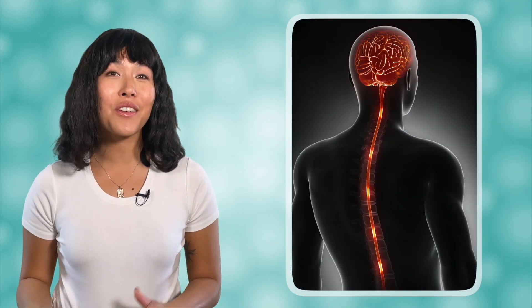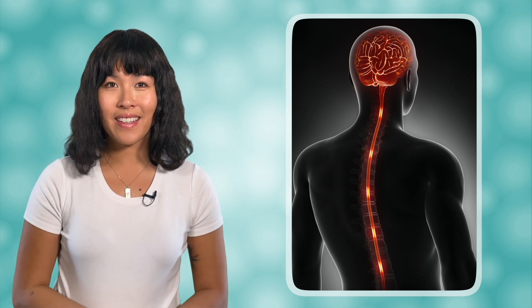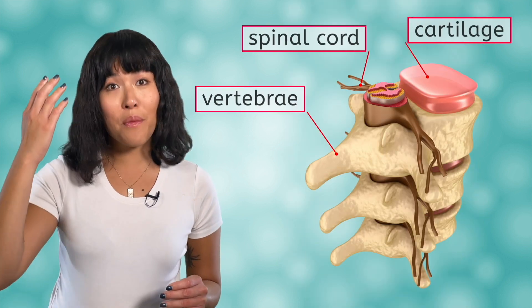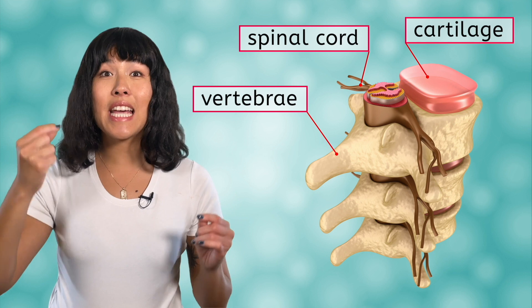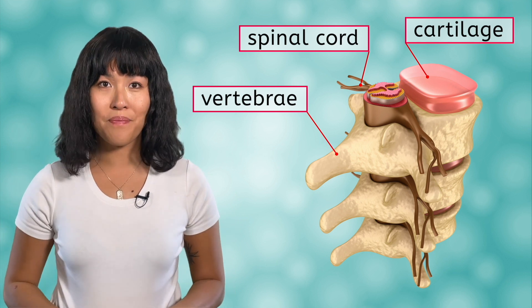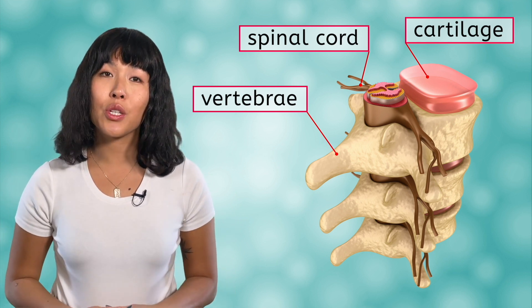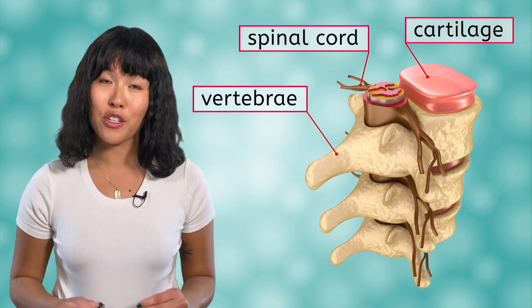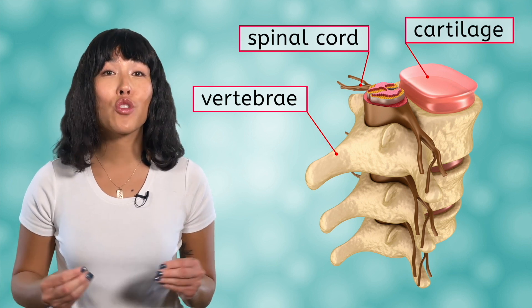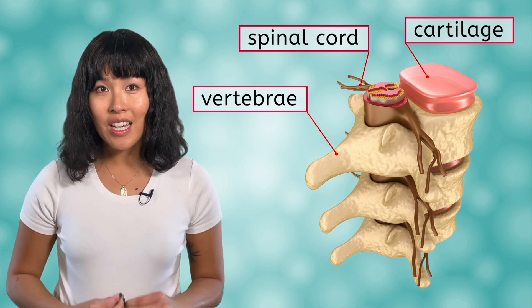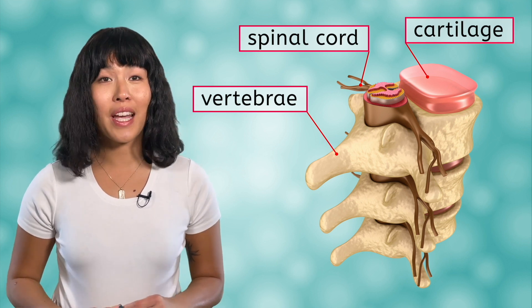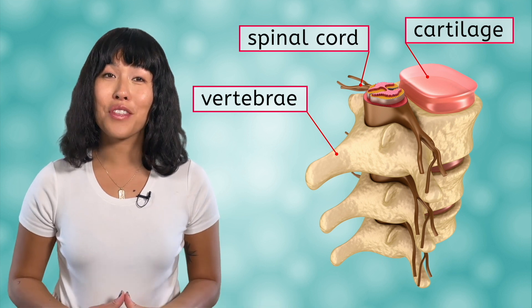Let's spend a little time looking at the two main structures of the central nervous system: the spinal cord and the brain. The spinal cord is a column of nervous tissue that runs from the brain down through the vertebral column. This tissue is very fragile, so it is protected by cerebrospinal fluid, soft tissue layers, and the vertebrae of the spine.